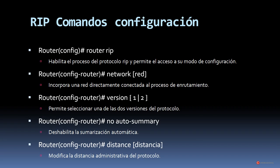A continuación repasamos los comandos para implementar RIP en cualquiera de sus versiones. El comando 'router rip' habilita el proceso y permite acceder a su modo de configuración. Dentro de ese modo, 'network [red]' incorpora una red directamente conectada al proceso; 'version' selecciona una de las dos versiones; 'no auto-summary' deshabilita la sumarización automática; y 'distance [valor]' modifica la distancia administrativa configurada por defecto.